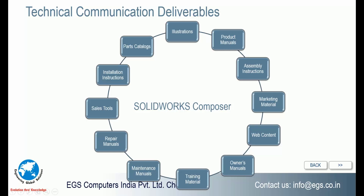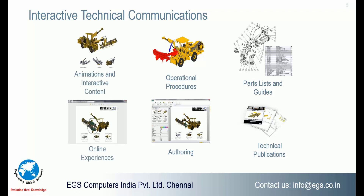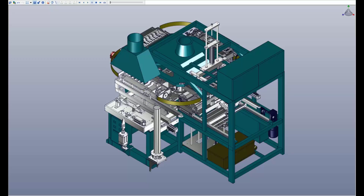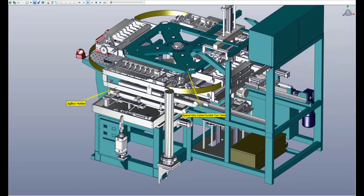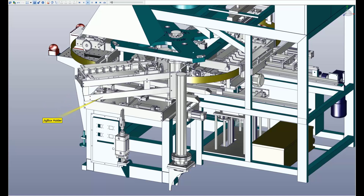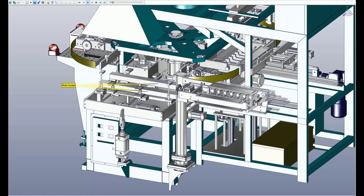The key outputs the technical documentation team creates day-to-day include animations, interactive content, operational procedures, spare parts catalogs, digital web content, and technical publications. Here are some examples done previously. This is a machine working functionality video — once the CAD geometry is ready, you can start documentation earlier in your design stage.